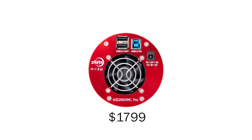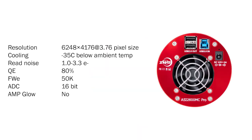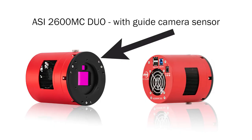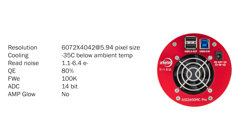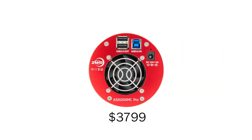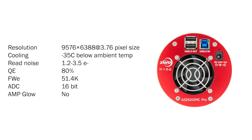In the $1000 to $2000 range, the ASI2600MC Pro stands out with its high quantum efficiency, high dynamic range and resolution of 26 megapixels. Furthermore, the recently released ASI2600MC Duo incorporates a unique guide camera chip, eliminating the need for separate guiding equipment. For those unconstrained by budget, the ASI2400MC Pro is recommended for longer focal length telescopes, and the ASI6200MC Pro boasts an impressive 61 megapixel resolution.